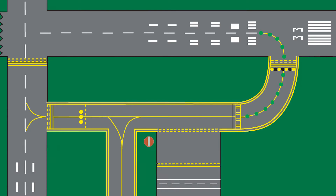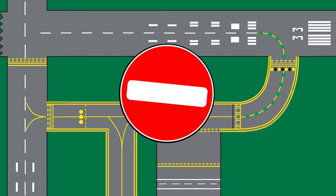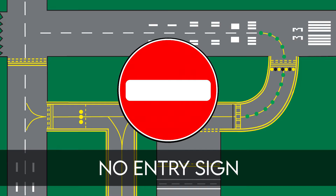The last mandatory sign is the no entry sign, which prohibits an aircraft from entering an area. Typically, this sign is located on a taxiway intended to be used in only one direction, or at the intersection of vehicle roadways with runways, taxiways, or aprons where the roadway may be mistaken as a taxiway or other aircraft moving surface.